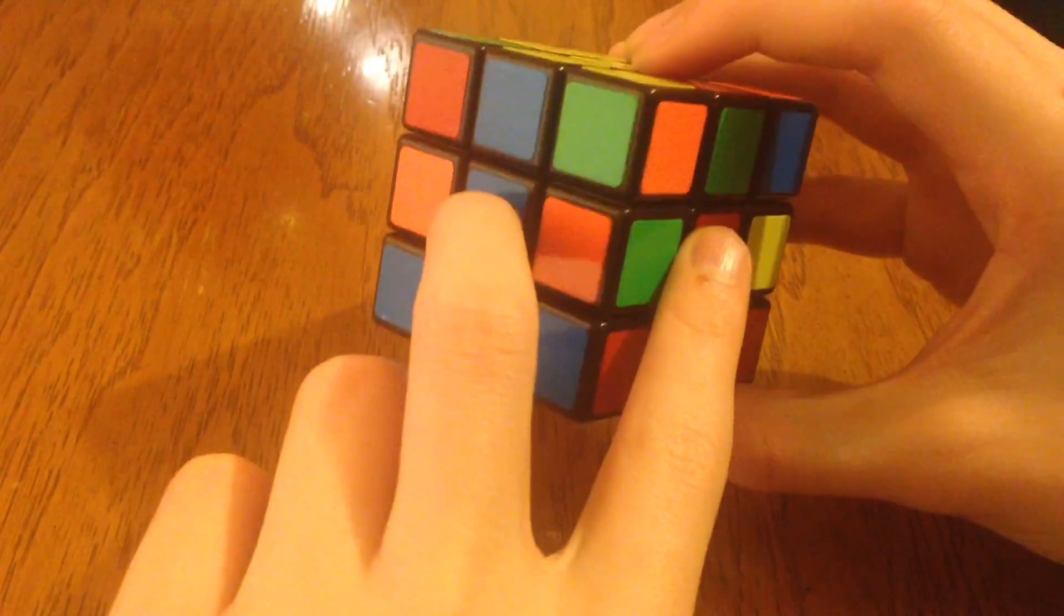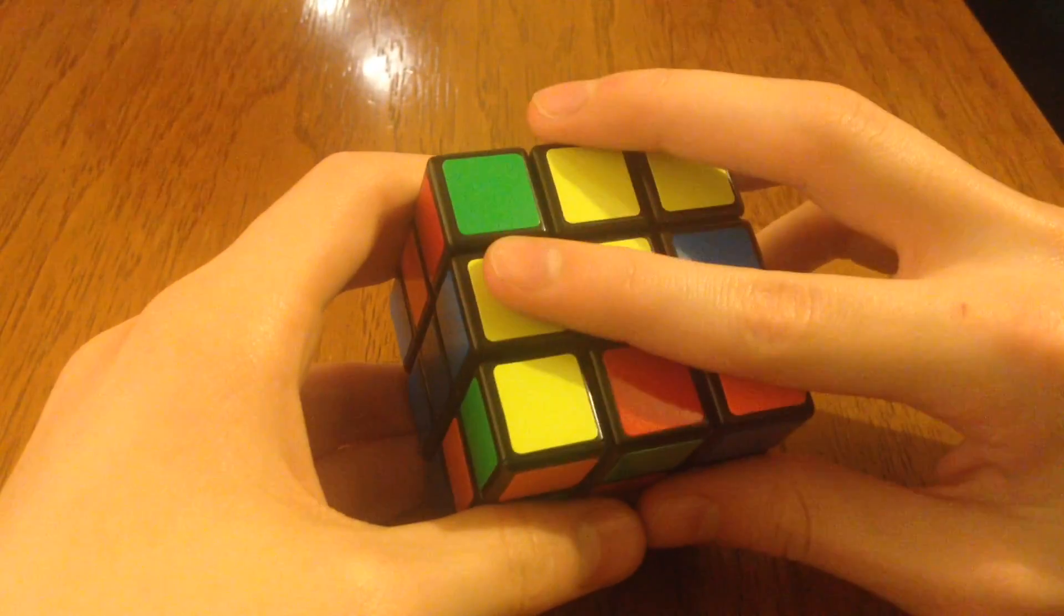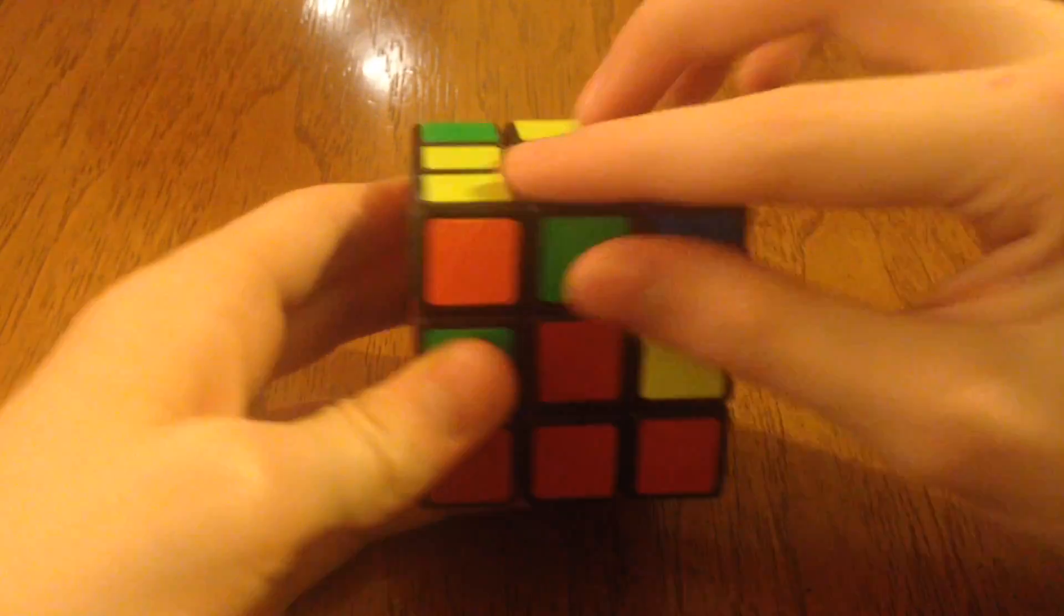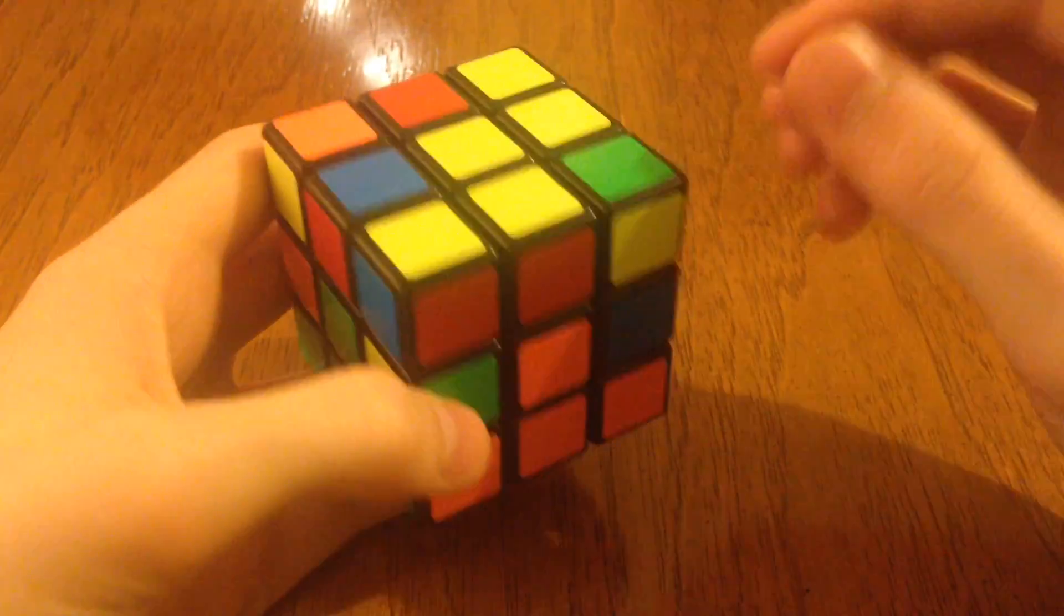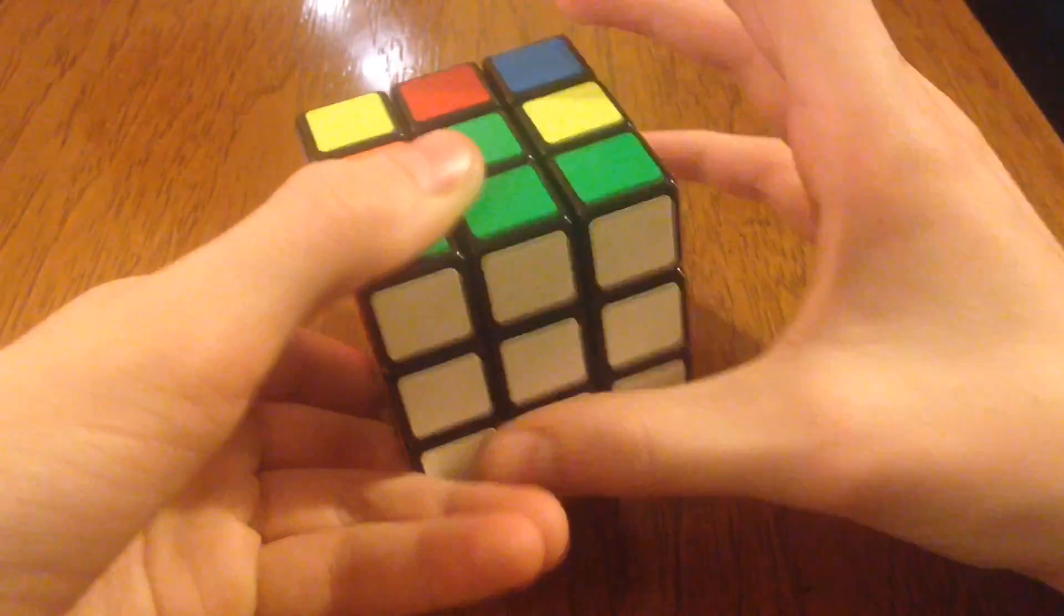So the top side is yellow. So anything that does not have yellow in it is going to end up being here, because all of these pieces on top is going to have yellow in it. So you find a piece that doesn't have yellow on the top, right? On the top layer.